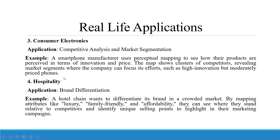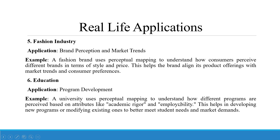Hospitality — brand differentiation. A hotel chain wants to differentiate its brand in a crowded market. By mapping attributes like luxury, family-friendly, and affordability, they can see where they stand relative to competitors and identify unique selling points for their marketing campaigns. Fashion industry — brand perception and market trends. A fashion brand uses perceptual mapping to understand how consumers perceive different brands in terms of style and price, helping align product offerings with market trends and consumer preferences.